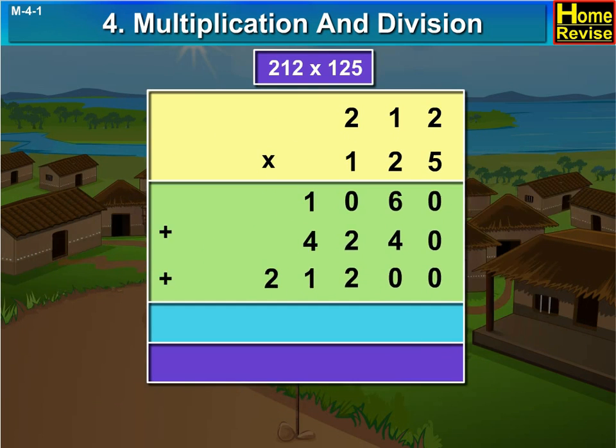Now, let us add 0 plus 0 plus 0 plus 0 is 0. 6 plus 4 is 10, plus 0 is 10. We write 0, carry forward 1.